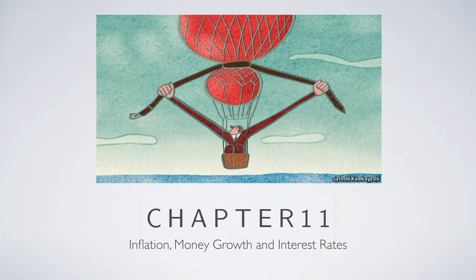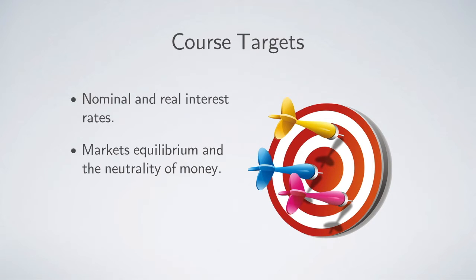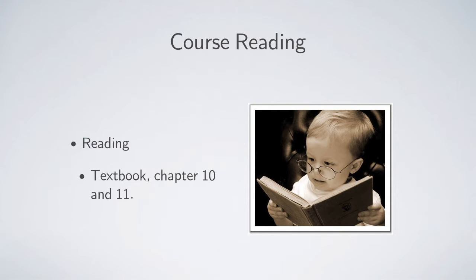Today we are going to learn a new topic: inflation, money growth, and interest rate. The course targets are understanding the difference between nominal and real interest rates, market equilibrium when there is money, the neutrality of money, and how the real interest rate is determined by the open market equilibrium. For this part, you need to read textbook chapters 10 and 11.